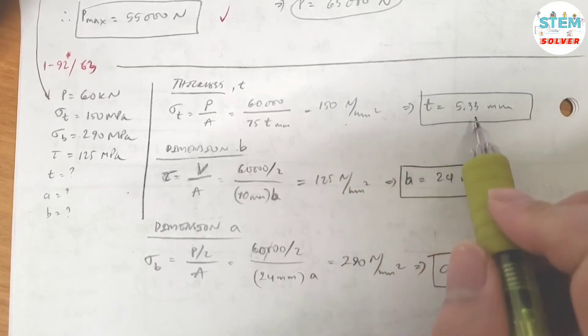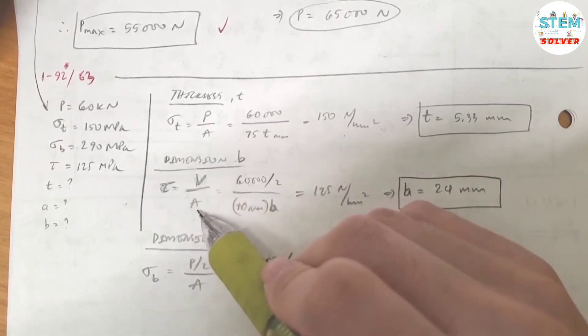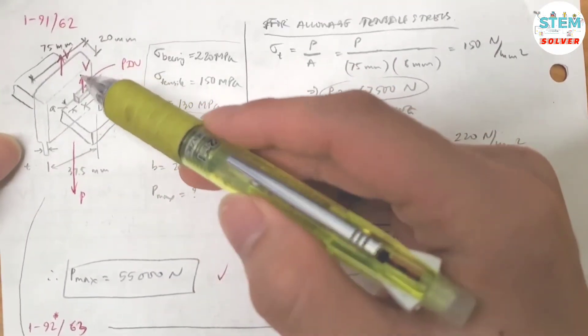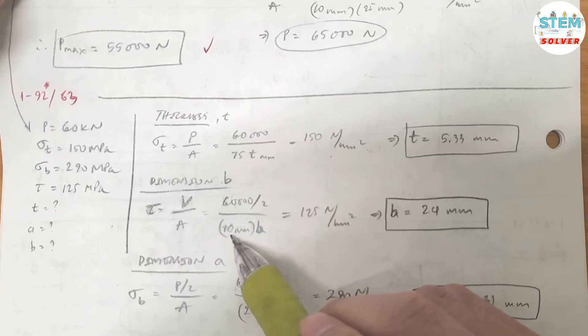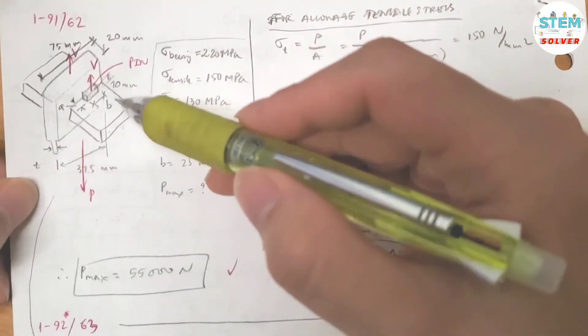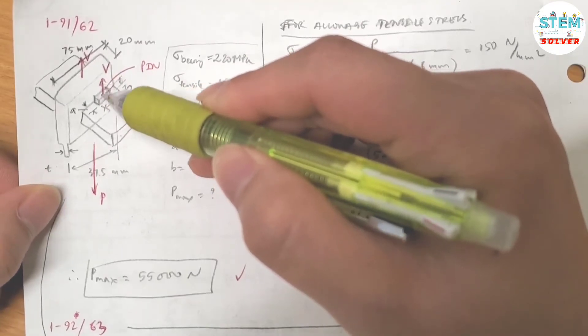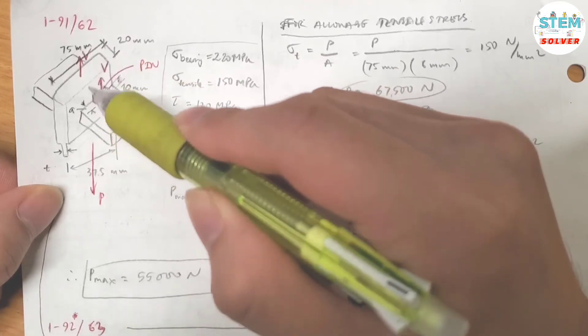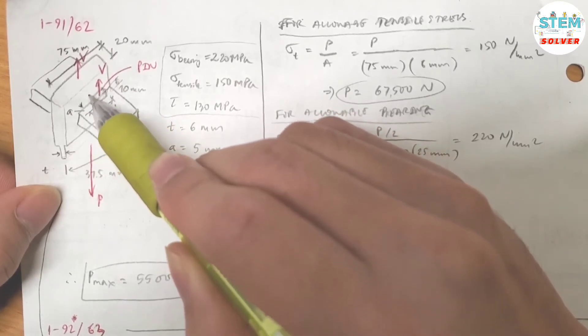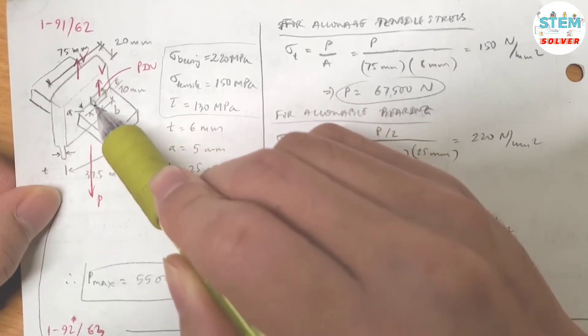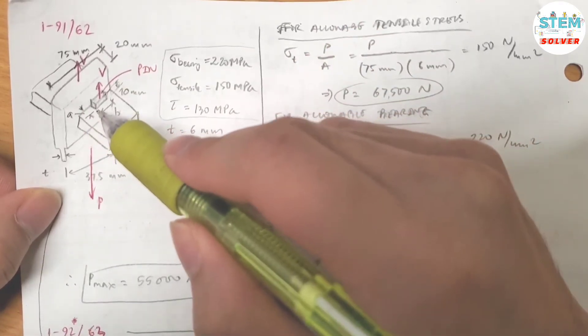Now for the dimension B using shear stress. Shear stress equals shear force divided by area. Looking at the figure, you have 2 shear forces - one on each side - so I divide by 2. The area is 10 B. The length is B and the width is 10 mm because that thickness is indicated here along the plane.